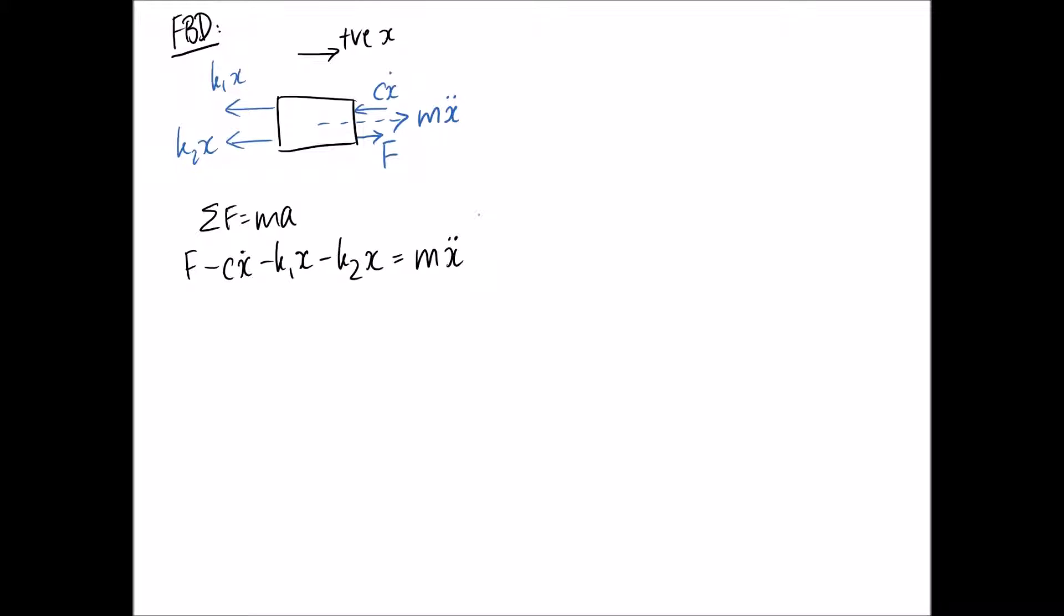So now I'm going to try and put everything on one side of the equation which has an x in it. So basically that's going to mean F equals mx double dot plus cx dot, and I'm going to put these together to get k1 plus k2 times x.